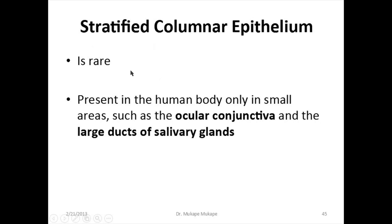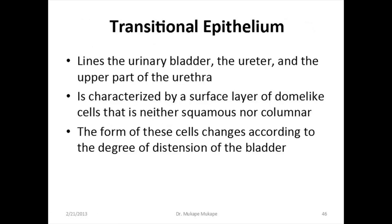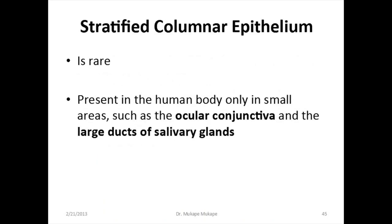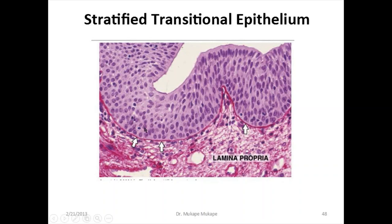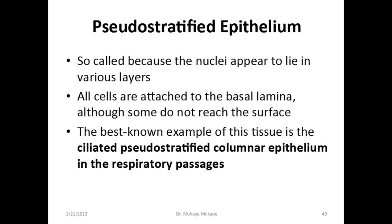Stratified squamous epithelia has many layers with squamous-shaped cells. Stratified columnar epithelia is very rare and only present in limited areas such as the ocular conjunctiva of the eye and the large ducts of the salivary glands. Transitional epithelia is found in the urinary bladder, urethra, calyces of the kidney, and the upper part of the urethra. This diagram shows how transitional epithelium appears histologically under a microscope.